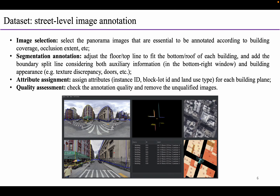For the street-level image annotation, we first design a rule-based method to select the panorama images that are essential to be annotated. Then the annotators use our annotation tool to address the floor and top line to fit the bottom and roof of each building, add the boundary split line considering both auxiliary information and building appearance, and assign the attributes for each building plane. Finally, another group of annotators will check the annotation quality and remove the unqualified images.